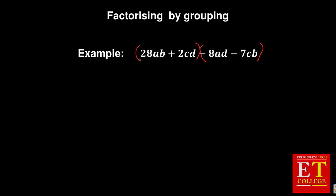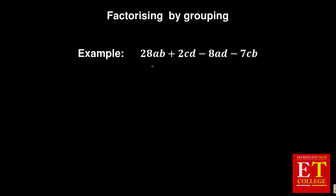If you look at the first two, you can see that 28 and 2 have something common, which is 2. But if you look at the variables, you have AB in the first one and CD in the second one — there is nothing common between AB and CD. So the main aim is to match the variables. In this case, let us suppose I want to match A as the priority, so I'm going to look for another variable that contains A.